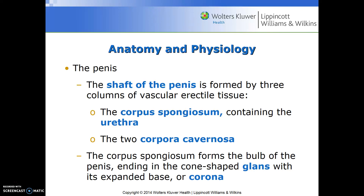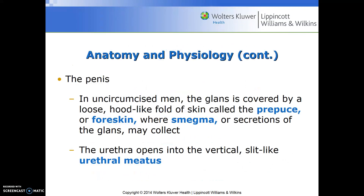The shaft of the penis is formed by three columns of vascular erectile tissue: the corpus spongiosum containing the urethra, and the two corpora cavernosa. The corpus spongiosum forms the bulb of the penis, ending in the cone-shaped glans with its extended base or corona. In uncircumcised men, the glans is covered by a loose hood-like fold of skin called the prepuce or foreskin, where smegma or secretions of the glans may collect. The urethra opens into a vertical slit-like urethral meatus.